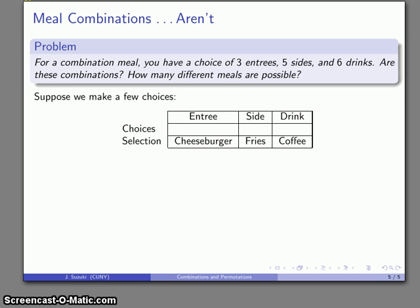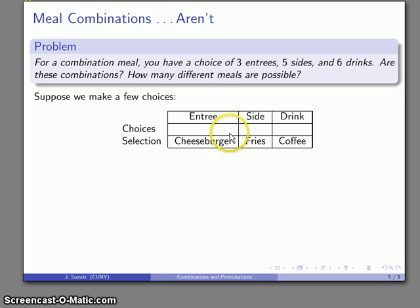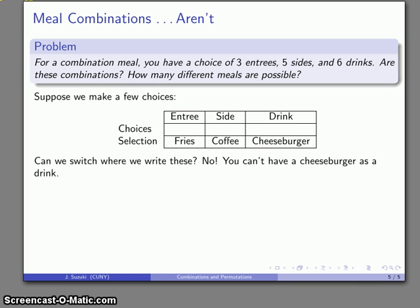Let's make a few choices. I have my choice for entree, my side, and my drink. So I have a cheeseburger, fries with a coffee. To answer the question whether I'm dealing with a permutation or a combination, the thing I want to answer is: can I switch where I write down a choice? Let's actually do that and see what happens.